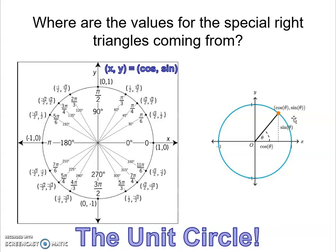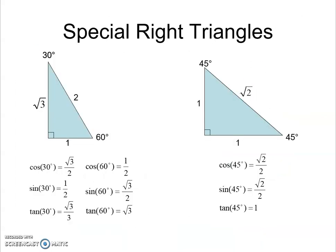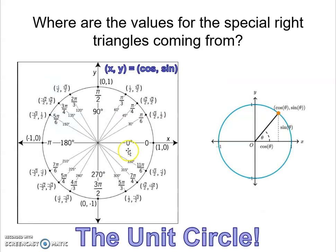But the most important thing to underscore is that these values didn't emerge out of thin air. These relationships didn't emerge out of thin air. They came from the values on the unit circle and through examining the relationships that exist from them. So that's a very important connection for you to make with your students.